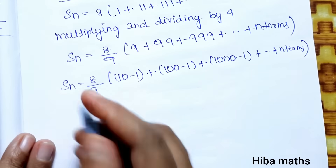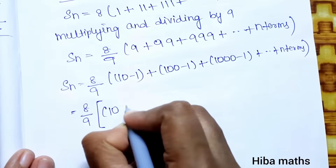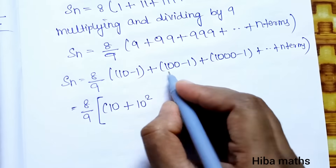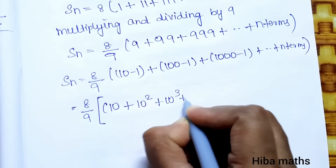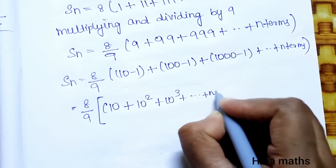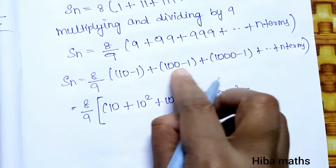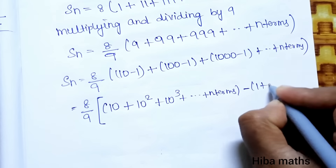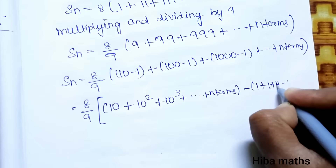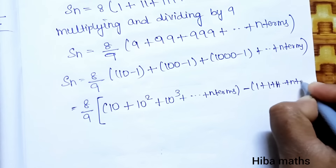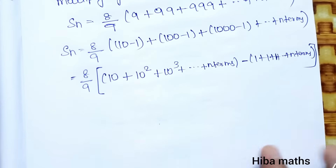This becomes (8/9) times [(10 + 10² + 10³ + ... up to n terms) minus (1 + 1 + 1 + ... up to n terms)].